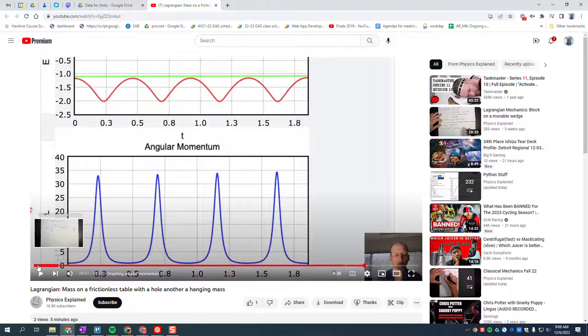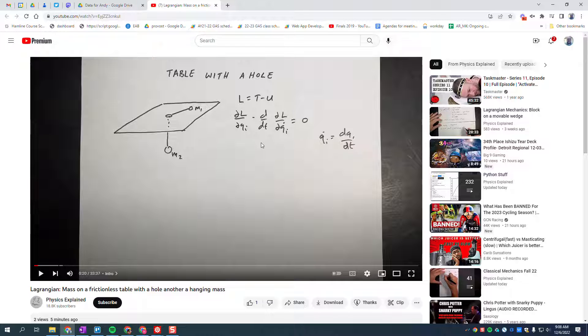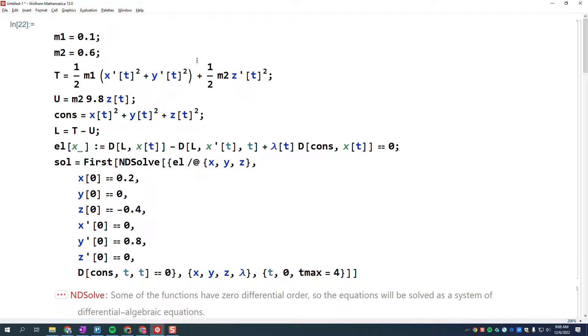But frankly as soon as I saw the setup I thought well how would I do that? And I realized that the constraint approach with a Lagrangian multiplier would be interesting. So I just coded it up and I was able to verify basically the same stuff.